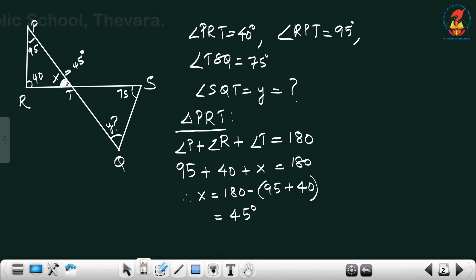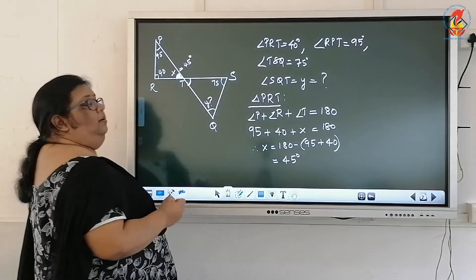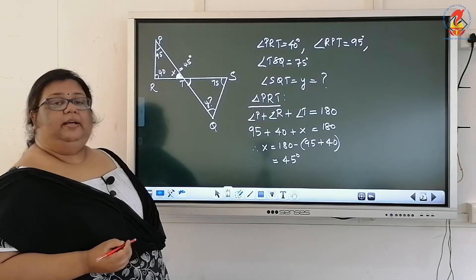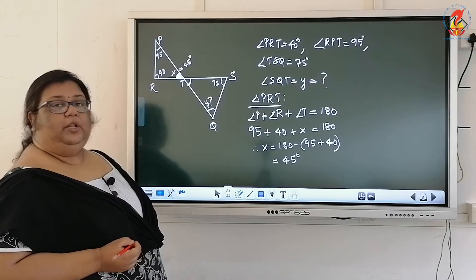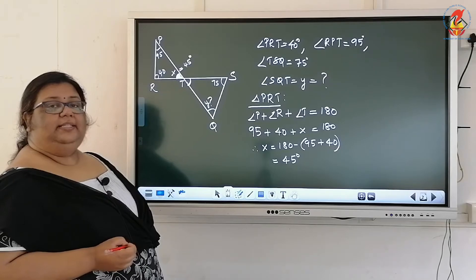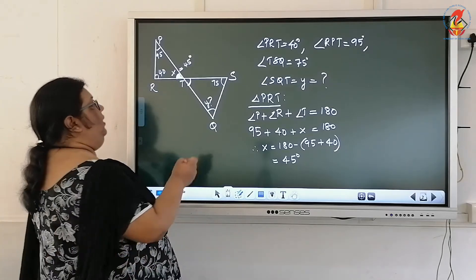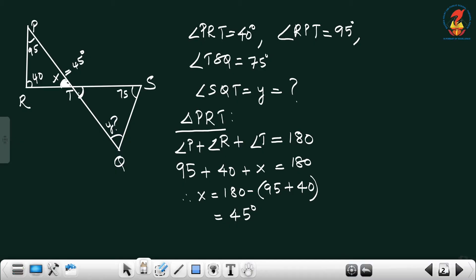If X is 45 degrees, what can you say about the other angle? These two angles are vertically opposite angles. Vertically opposite angles are equal. So if this is 45, this angle is also 45.